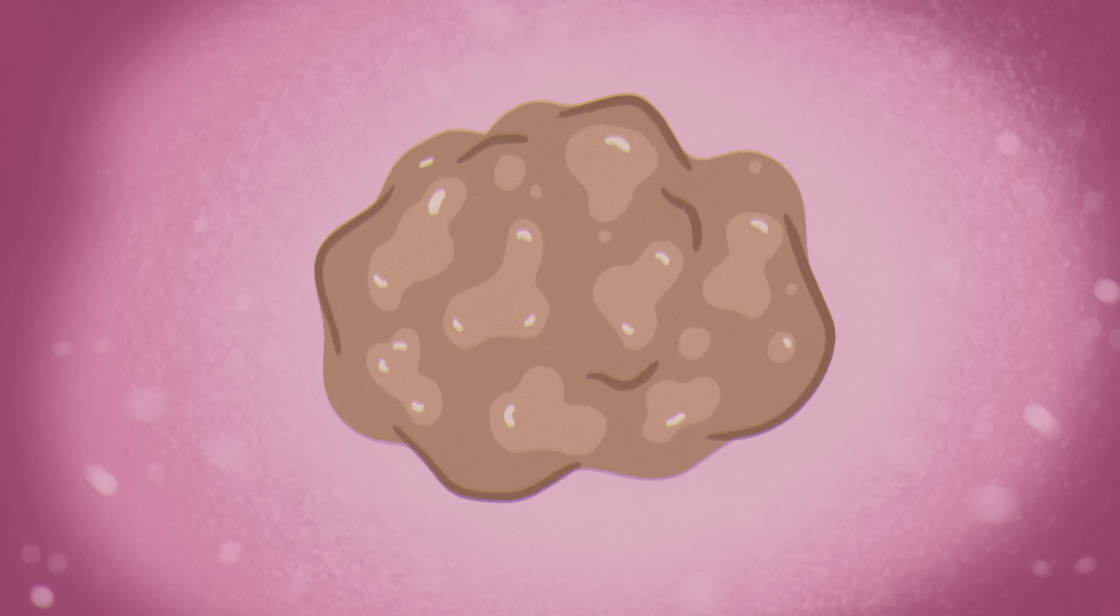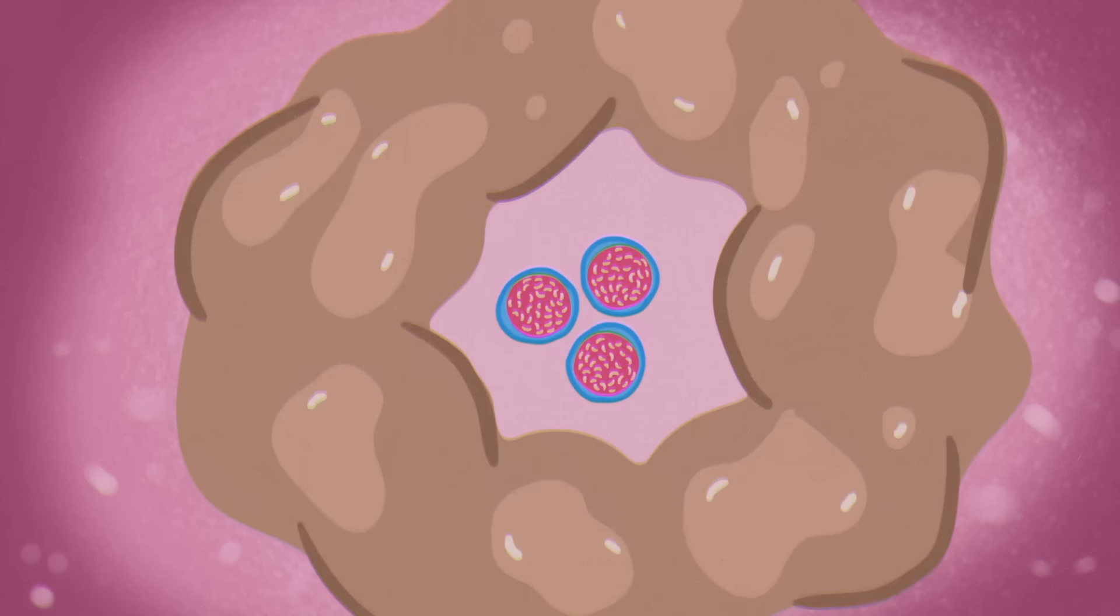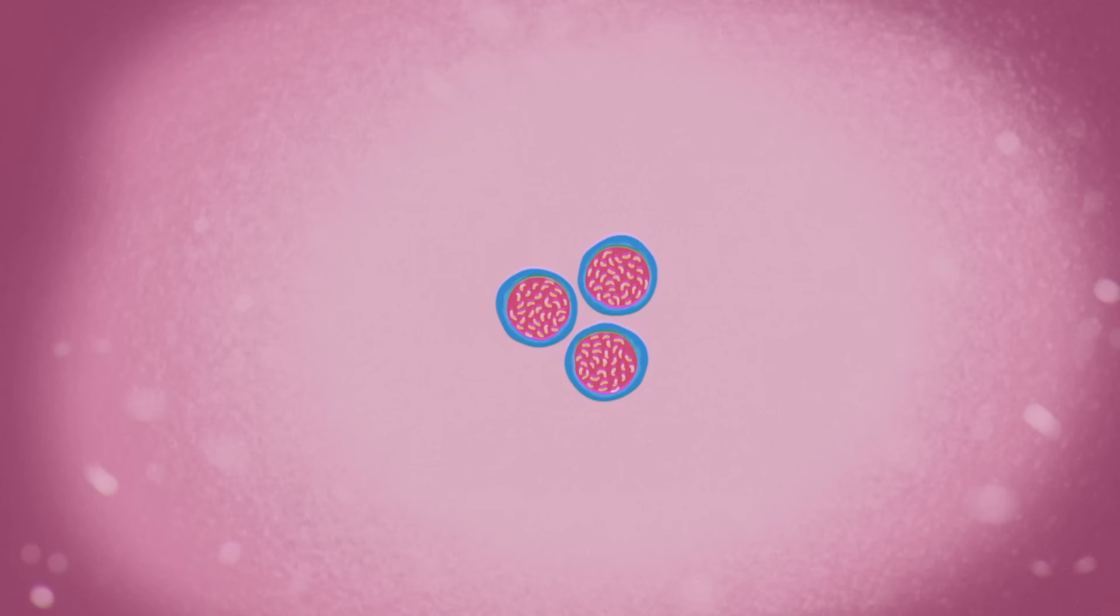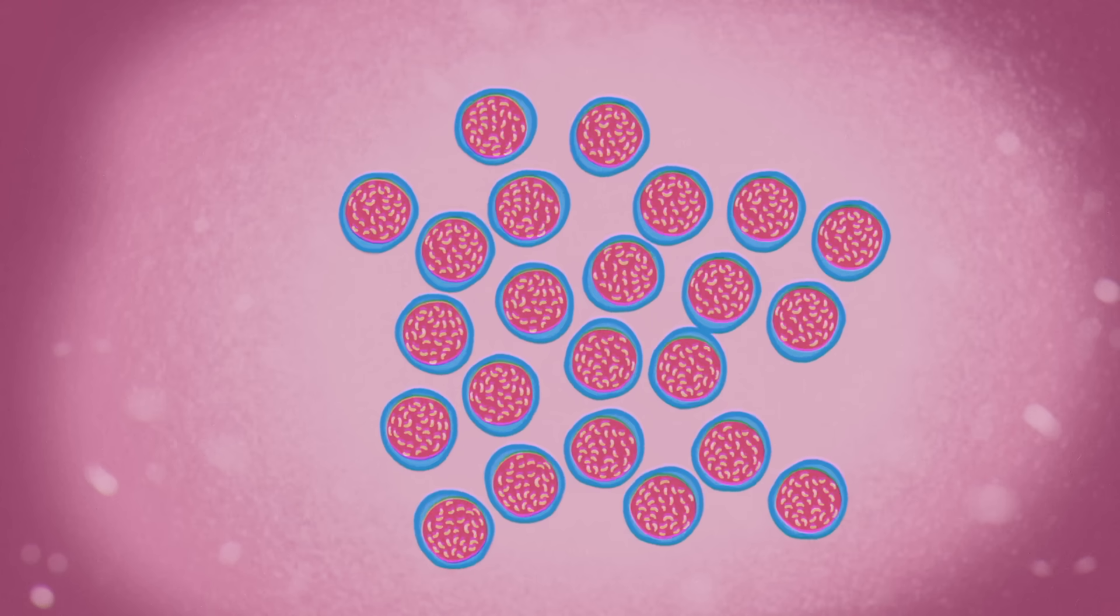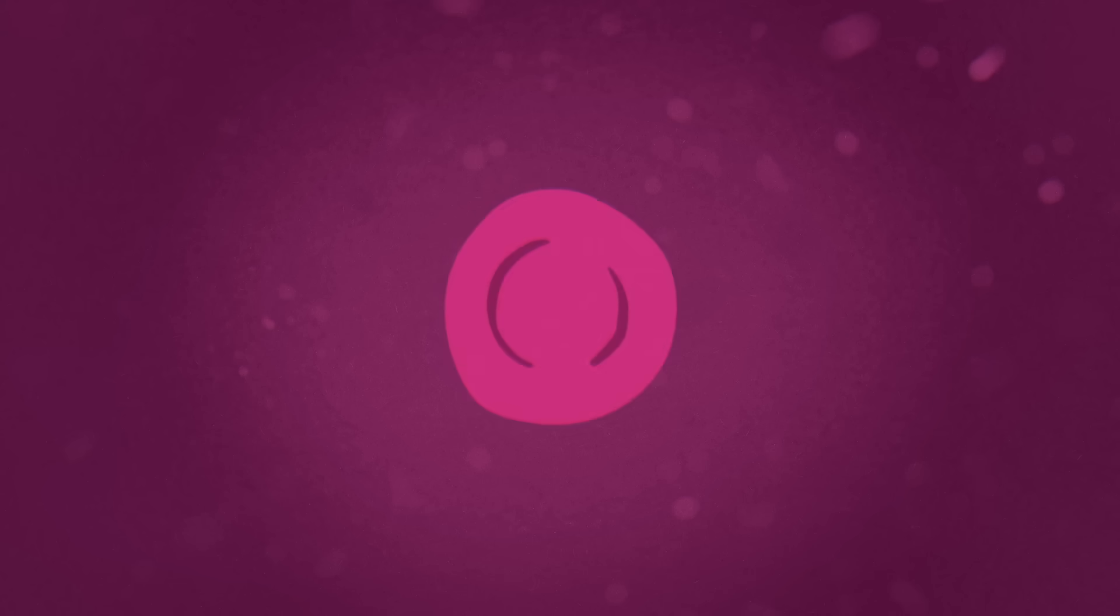Marrow contains fat and other supportive tissue, but its most essential elements are blood stem cells. These stem cells are constantly dividing. They can differentiate into red blood cells, white blood cells, and platelets.